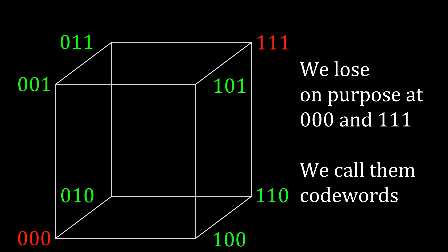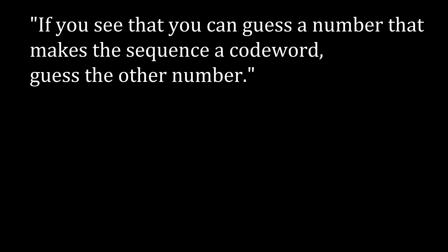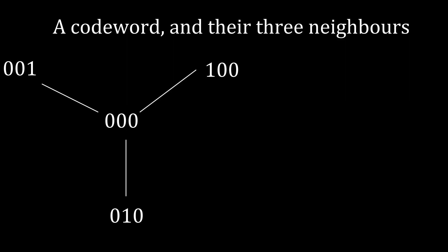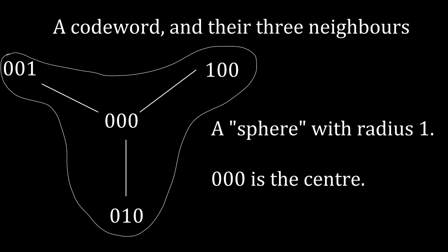Using sequences and codewords, we can rephrase the strategy rule: if you see that you can guess a number that makes the sequence a codeword, guess the opposite number. For instance, if you see 1 and 1 with the middle number unknown, guessing 1 would make the sequence the codeword 1,1,1 — so you should guess the opposite, which is 0. What is the role of codewords? Each codeword has neighbors — points with Hamming distance 1 from that codeword. For instance, the codeword 0,0,0 has three neighbors: 1,0,0 and 0,1,0 and 0,0,1. Together, the four points create a sphere with radius 1, and 0,0,0 is the center of that sphere.